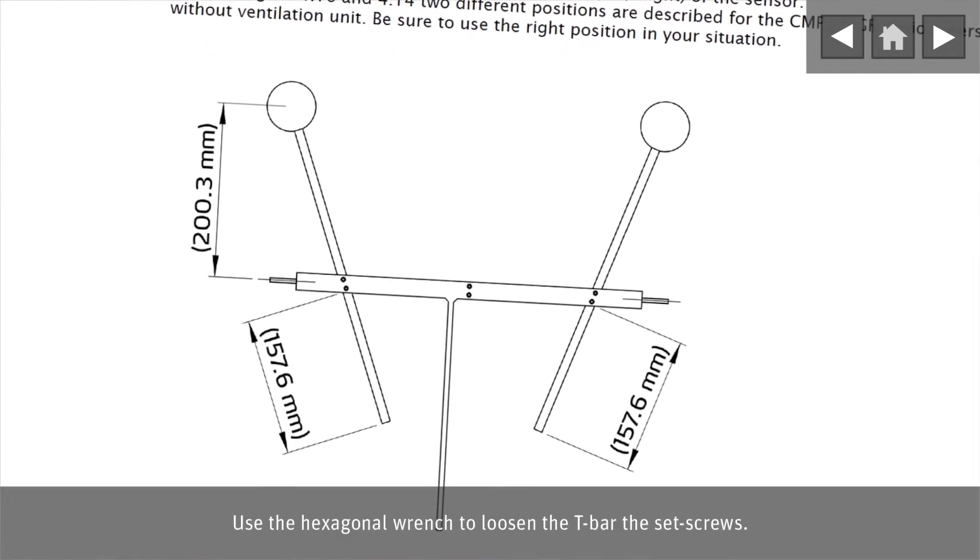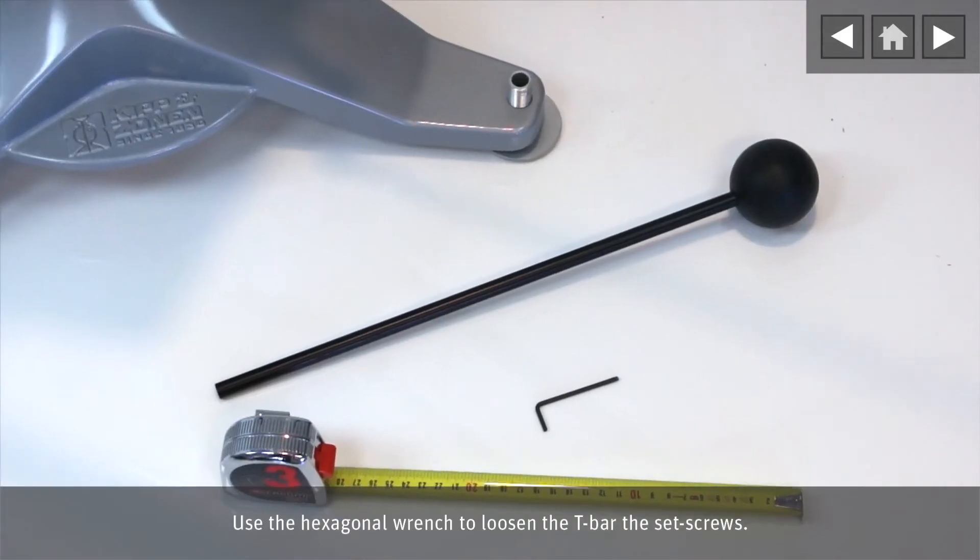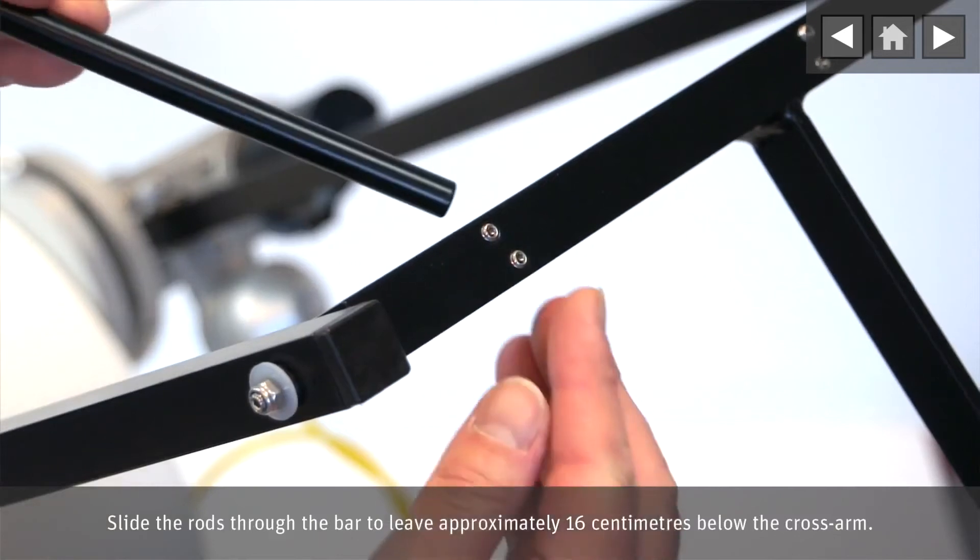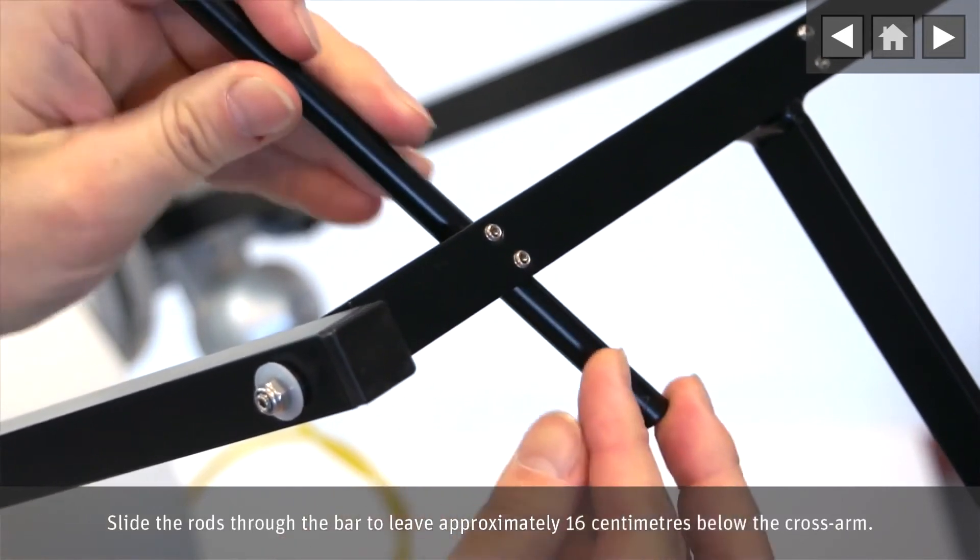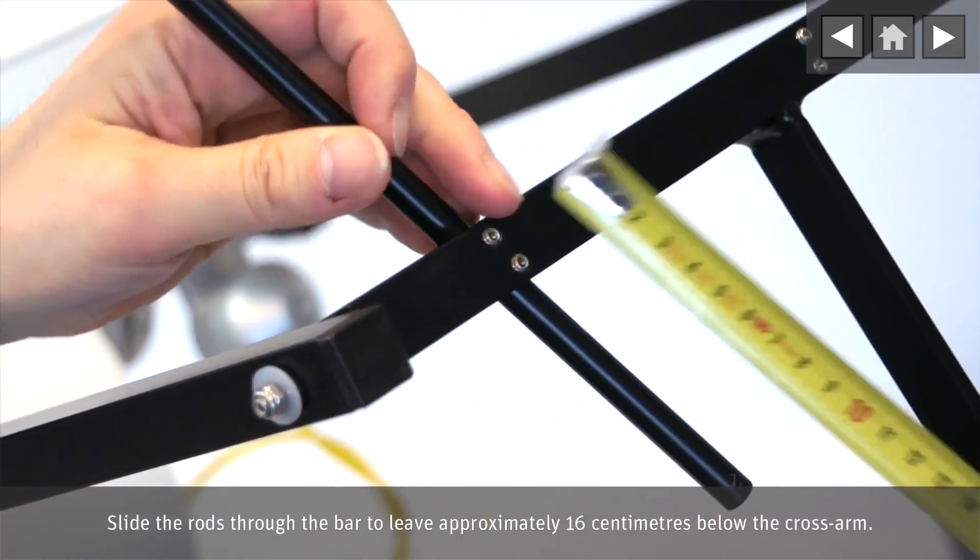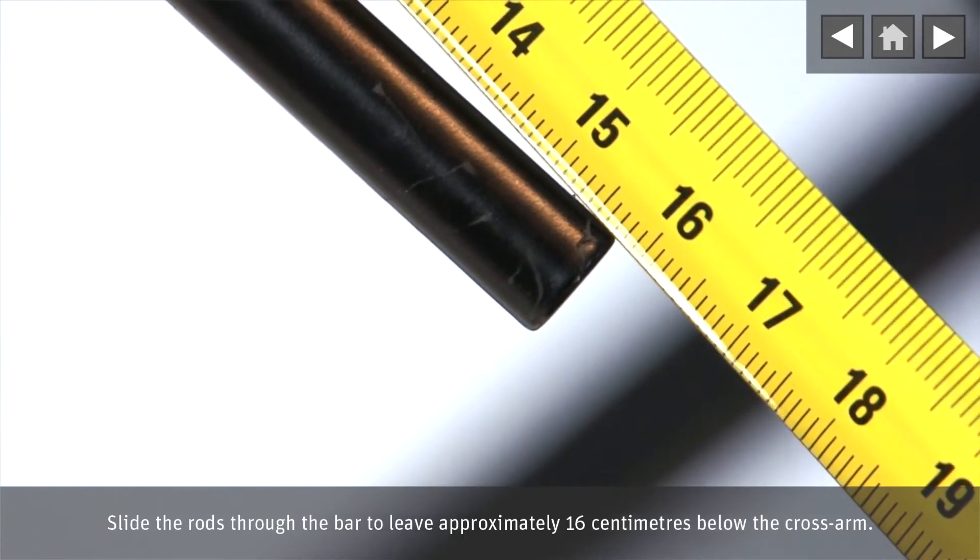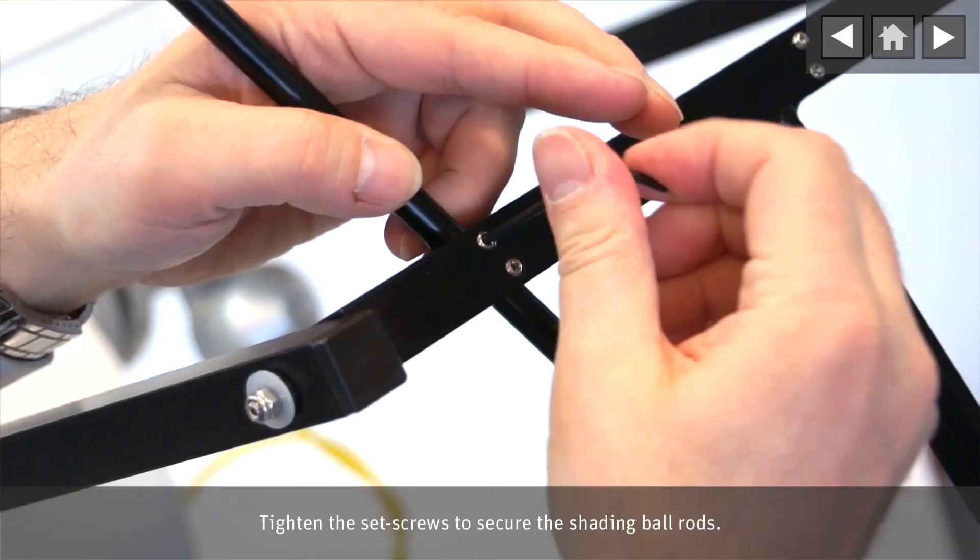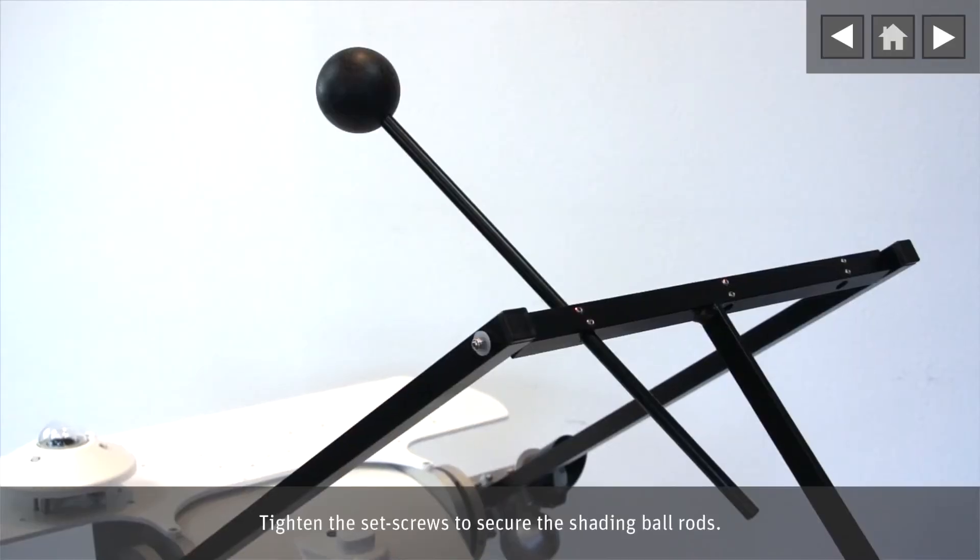Use the hexagonal wrench to loosen the T-bar set screws. Slide the rods through the bar to leave approximately 16 cm below the cross arm. Tighten the set screws to secure the shading ball rods.